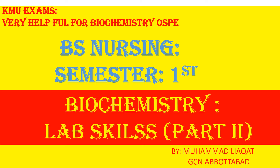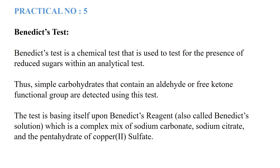Assalamu alaikum students, this is part two of the biochemistry lab skills, practical five. The Benedict's test is mainly used for reduced sugars — it is an analytical test for the identification of simple carbohydrates, specifically those with aldehyde and free ketone functional groups. In this test we mainly use Benedict's reagent, also called Benedict's solution, which consists of sodium carbonate, sodium citrate, and copper sulfate pentahydrate.